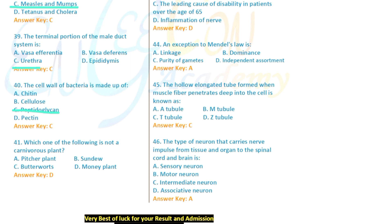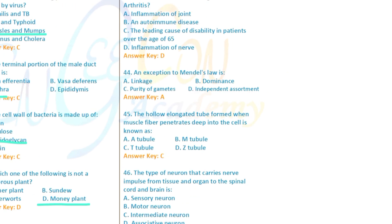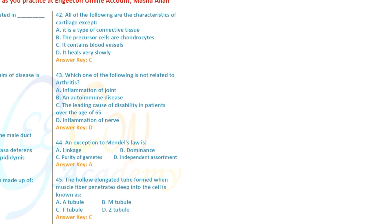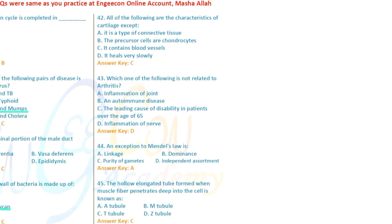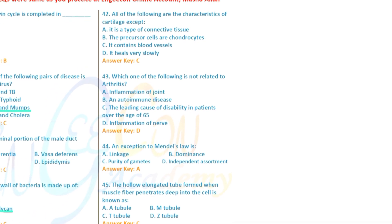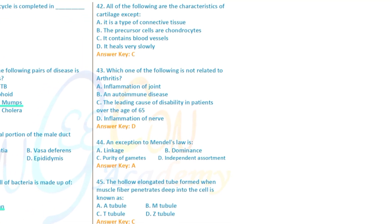Question 41: Which of the following is NOT a carnivore? Sundew and Venus flytrap are carnivorous plants — a non-carnivore option is selected. Question 42: All of the following are characteristics of cartilage EXCEPT — cartilage does not have blood vessels, so that is the exception.